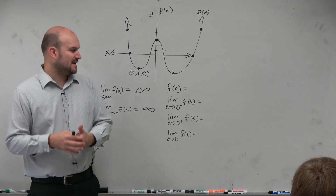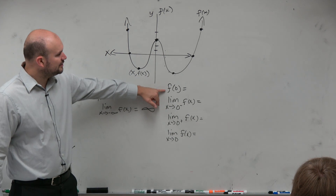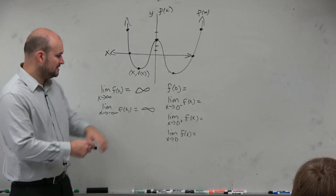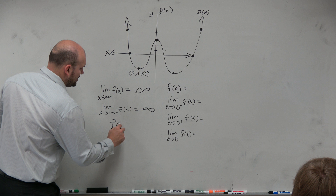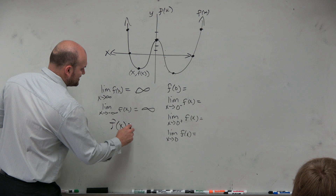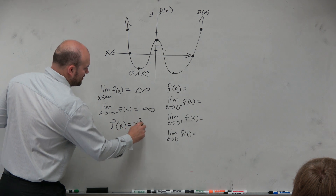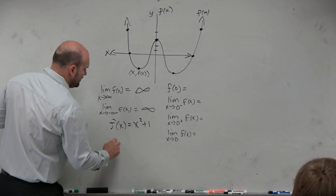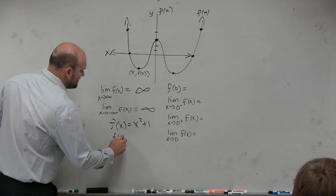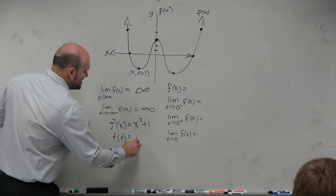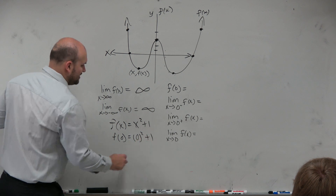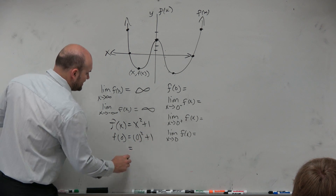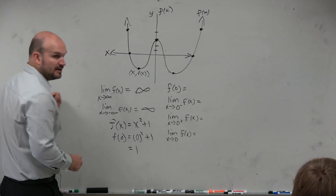So to really understand that, the first thing we're going to do is evaluate the function. You guys remember, if I said f of x equals x squared plus 1, and then I said f of 0, basically you just plug 0 in for x and then find the output value.